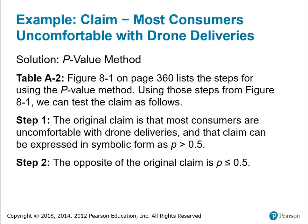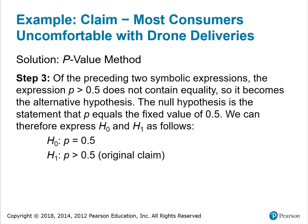Using the P-value method, we turn to figure 8.1 on page 360, which lists the steps for using the P-value method. The original claim is that most consumers are uncomfortable with drone deliveries, expressed in symbolic form as P is greater than 0.5. The opposite of the original claim is P is less than or equal to 0.5. Since P is greater than 0.5 does not contain equality, it becomes the alternative hypothesis. The null hypothesis is the statement that P equals the fixed value of 0.5. Therefore, H-sub-0: P equals 0.5; H-sub-1: P is greater than 0.5, which is the original claim.